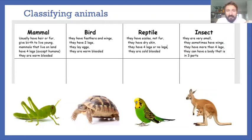Reptiles: they have scales not fur, they have dry skin, they have four legs or no legs and they are cold blooded. And insects: they're very small, they sometimes have wings and they have more than four legs and they can have a body that is in three parts. How strange. Well, take a minute or so, write down the names and then maybe put them into the correct table part that they should go in, then come back and we'll have a look at them together. Wonderful. So let's have a look.